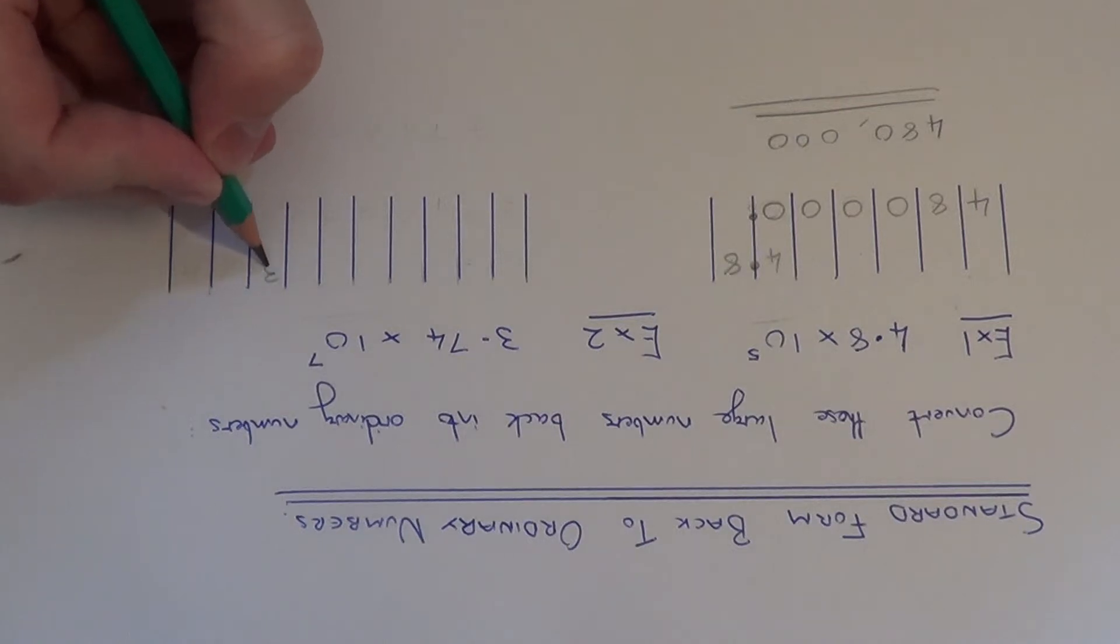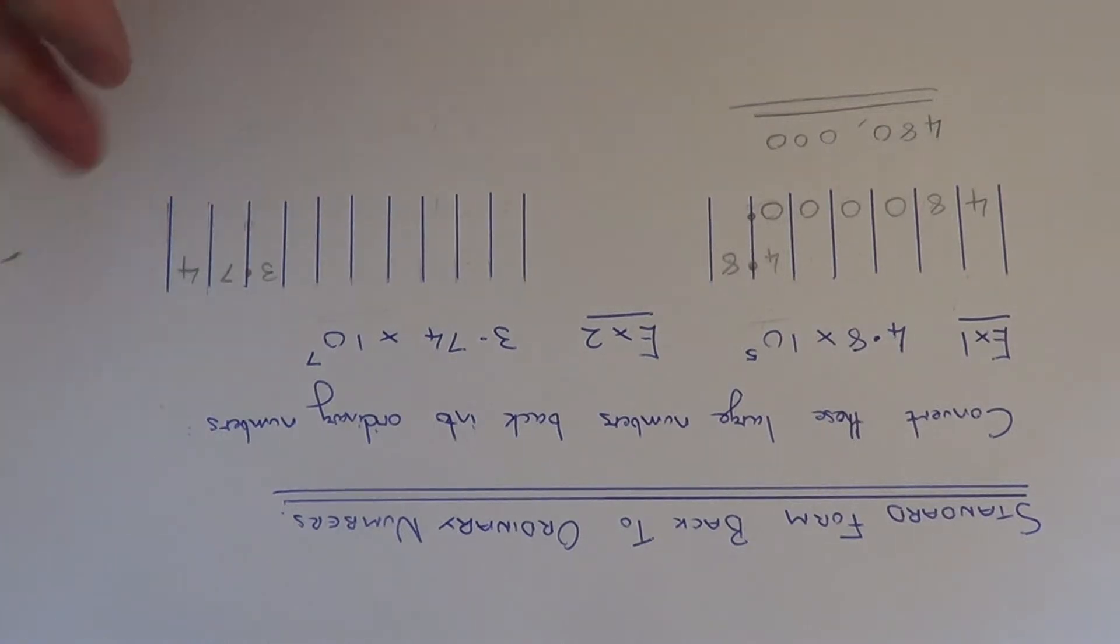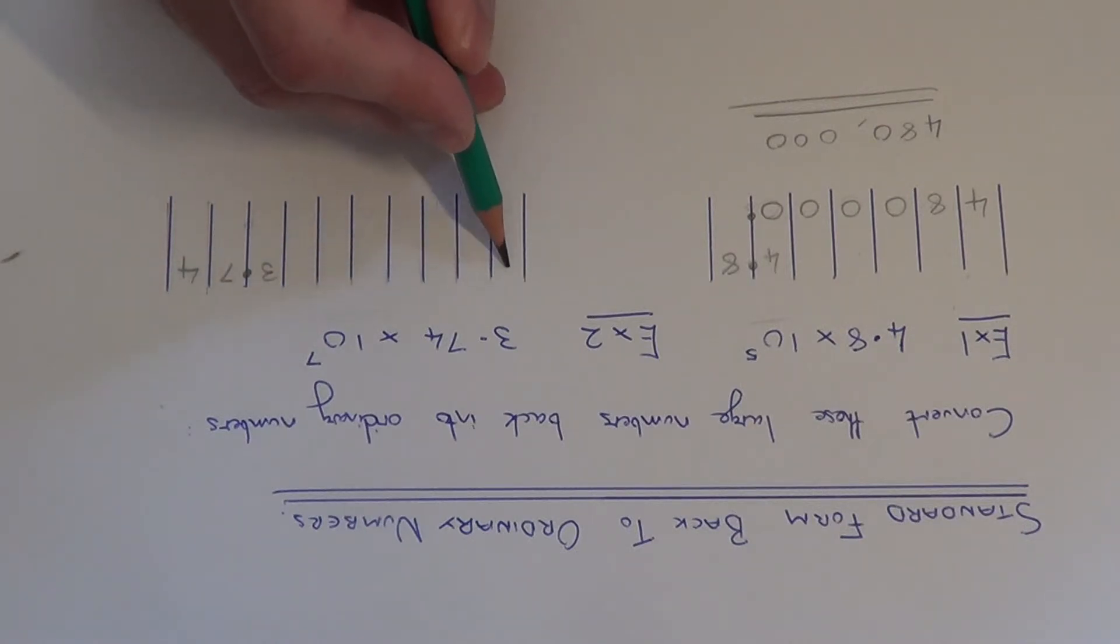So if we put 3.74 into the columns below, all the digits here will need to move 7 places to the left. So let's move the 3 first. 1, 2, 3, 4, 5, 6, 7.